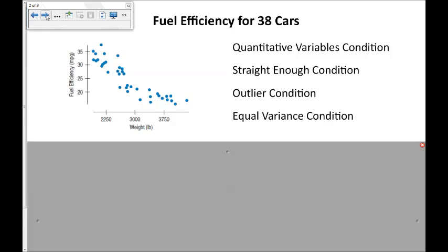Here is fuel efficiency for 38 cars, the weight of those cars, and their fuel efficiency in miles per gallon. Both are quantitative variables. From first glance, it looks like it might be straight enough. It looks like a pretty straight downward linear curve. There aren't any strong outliers that we see. It seems to be similar variance throughout the graph.